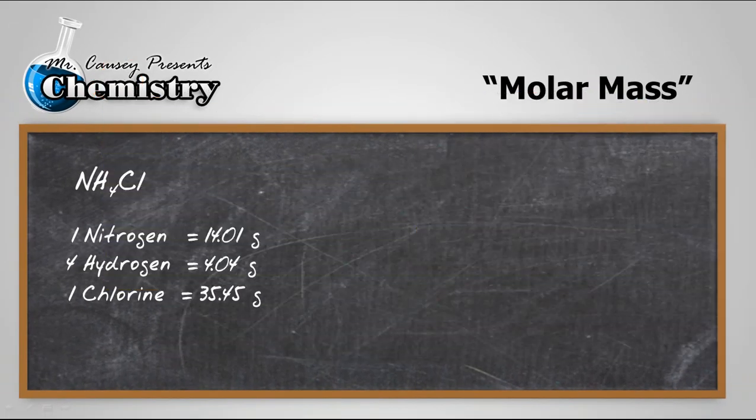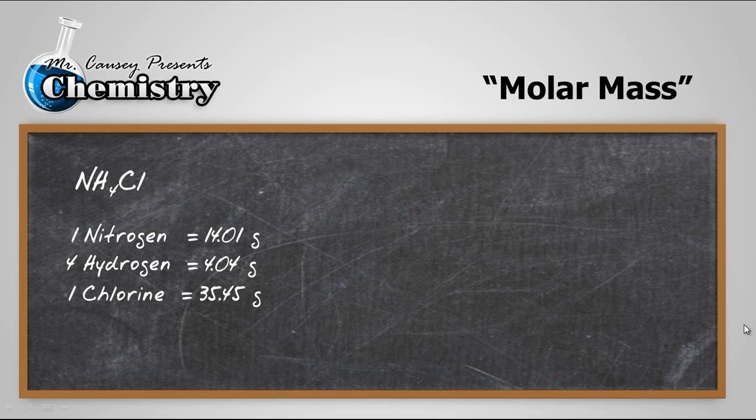Now, one nitrogen is 14.01, four hydrogen is going to be 4.04, and one chlorine 35.45. I'm going to plug and chug that, and that will give us 53.50 grams ammonium chloride.